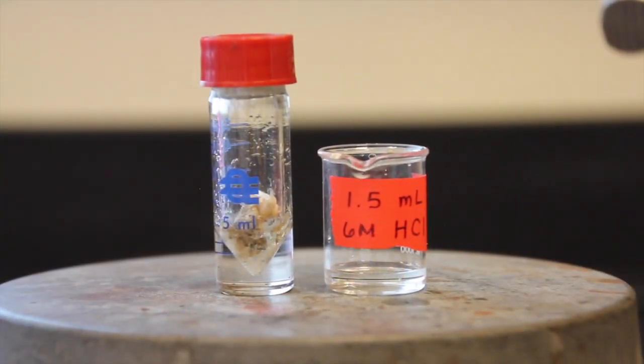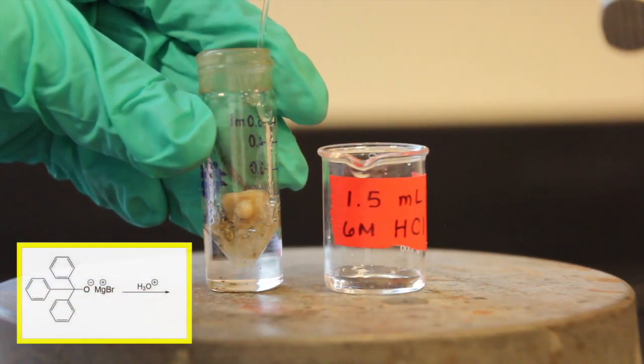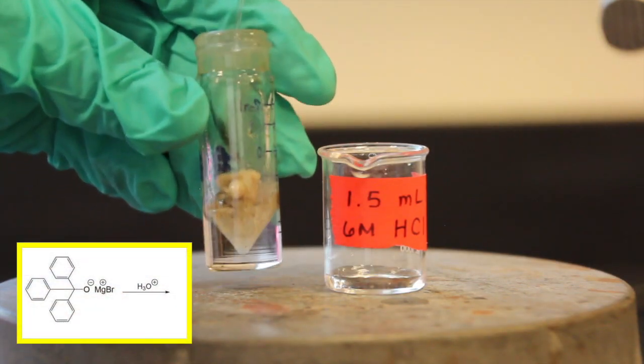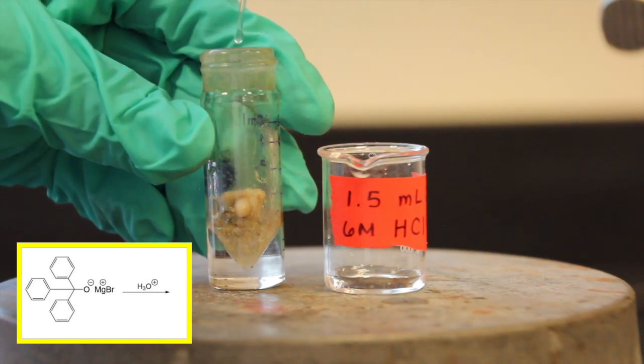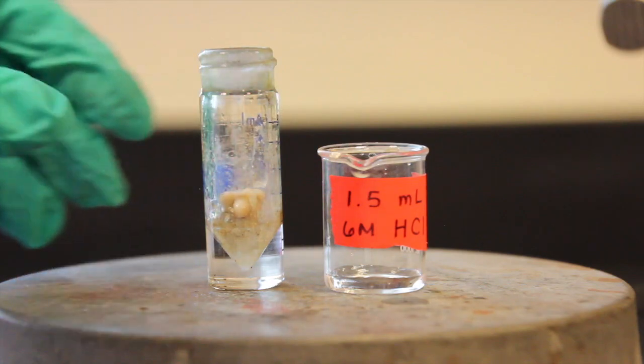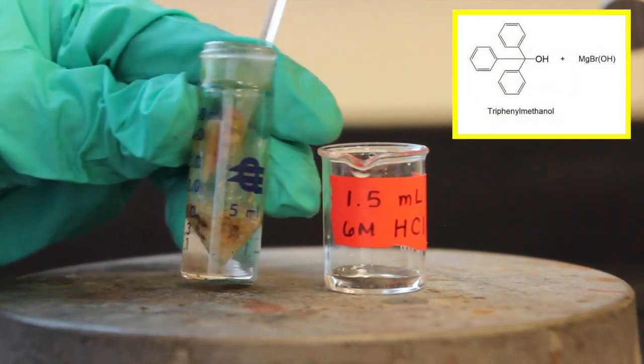Obtain 1.5 milliliters of 6 molar hydrochloric acid and add it dropwise to the adduct to neutralize the reaction mixture while also stirring occasionally. Neutralization reactions are exothermic, so if you add the HCl too quickly it will cause your ether to boil over and you will lose product. The hydrochloric acid will convert the adduct to triphenylmethanol and inorganic compounds.